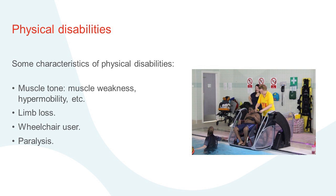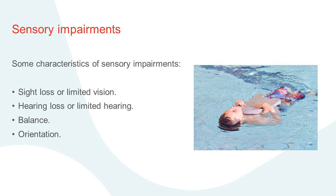We can look at characteristics in different ways. Physical disabilities might include weakness in muscles, hypermobility of joints, limb loss, wheelchair use, or paralysis — these are largely visible needs. We then have sensory impairments: sight loss or limited vision, hearing loss or limited hearing, and difficulties with balance or orientating themselves around the pool. Some of these might only present themselves when you start teaching the core aquatic skills.